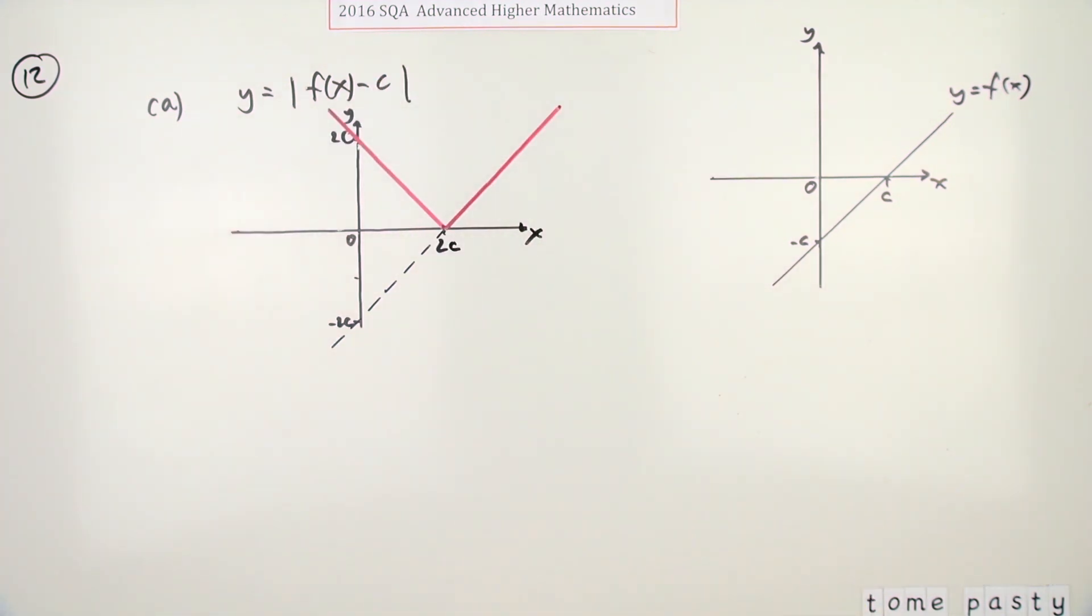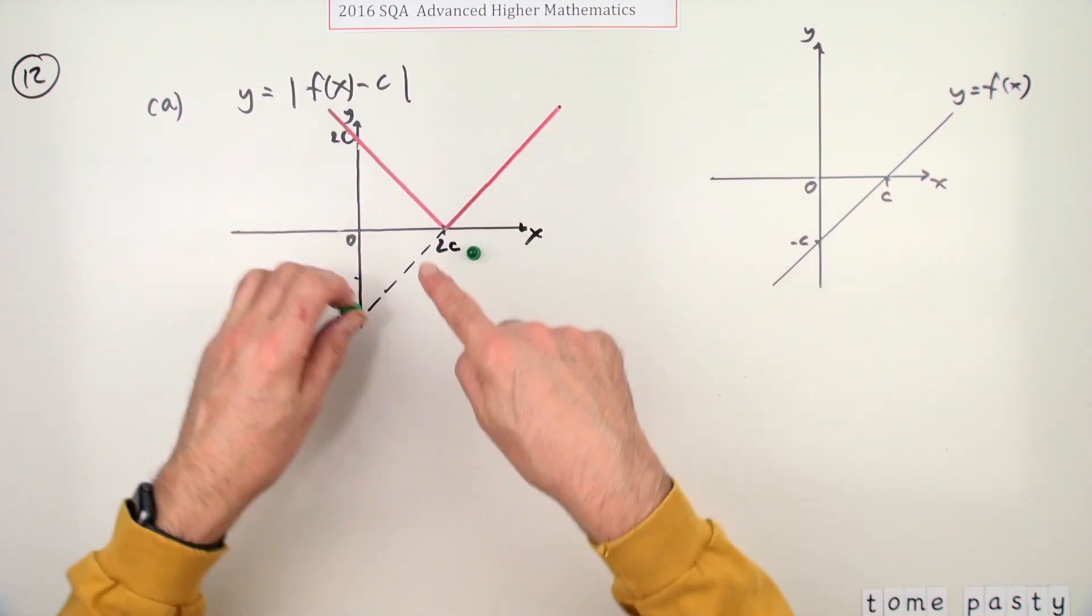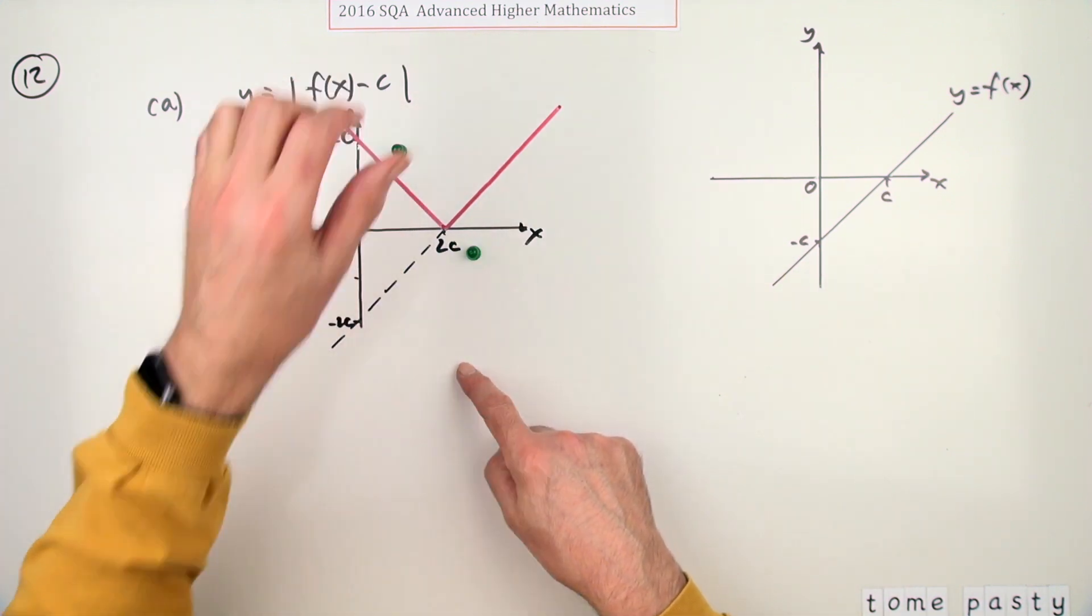Meaning that's the graph that they want, where you get one mark for having the two c's and another mark for having the correct shape, which is this part reflected up.